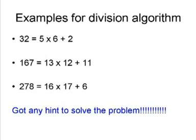Let's see some examples. The number 32 can be expressed as 5 × 6 + 2. 167 is 13 × 12 + 11, and 278 is 16 × 17 + 6. So if you divide 32 by 5, you get a remainder of 2. 167 by 12 gives remainder 11, and 278 by 17 gives remainder 6.